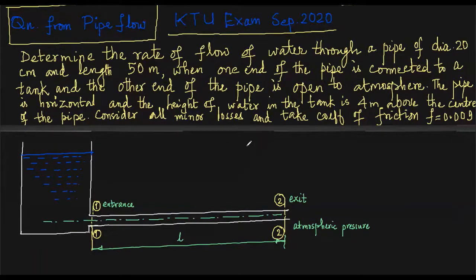Consider all minor losses and the Darcy's coefficient of friction F is equal to 0.009. It's not friction factor, friction factor means four times this value. So it will be 0.036 friction factor in the given case.